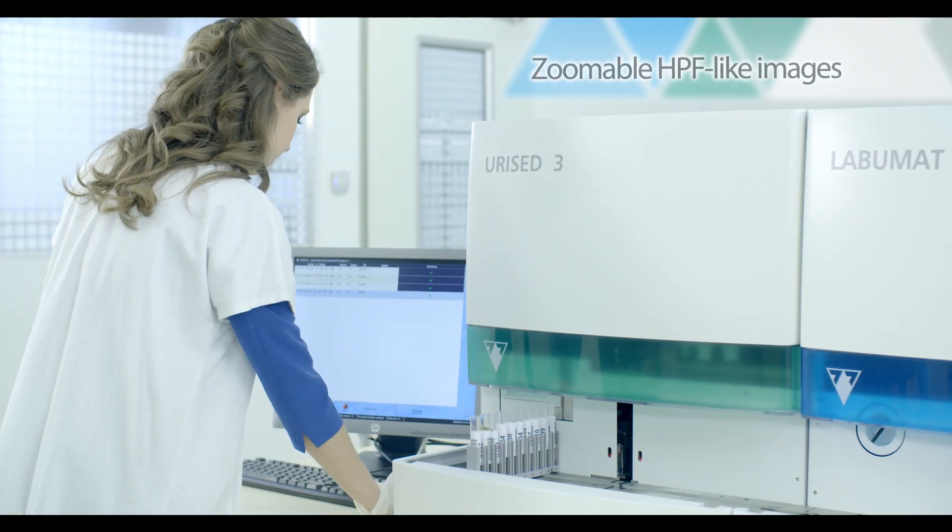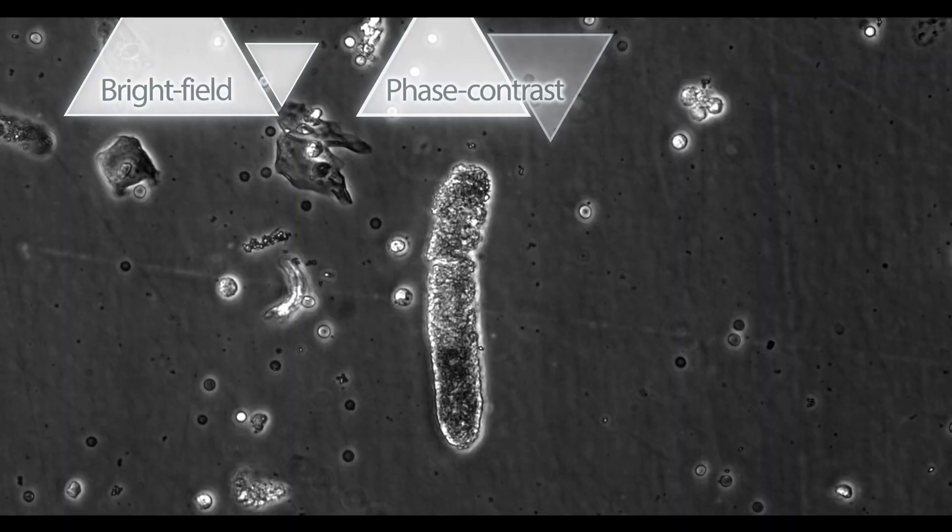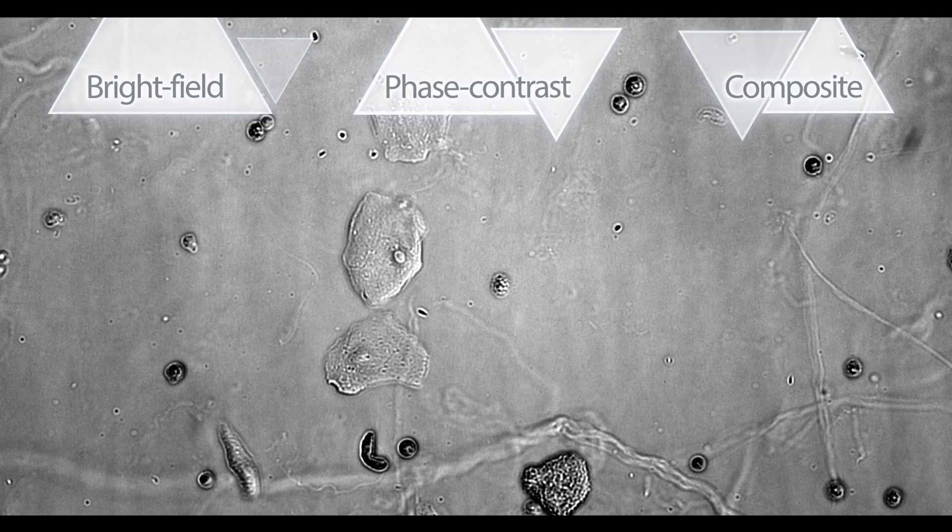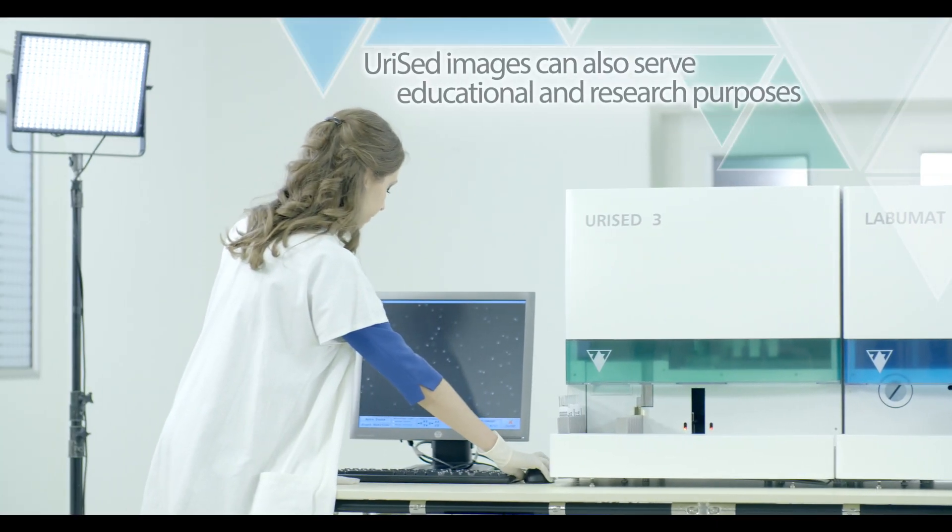Three types of images from each sample are stored in the database: a bright field, a phase contrast, and a composite image, which is a combination of the former ones.